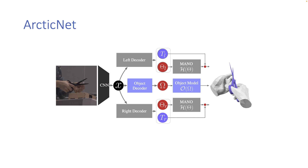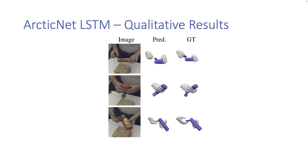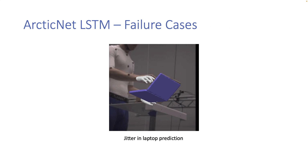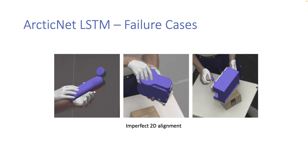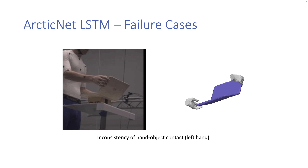To provide a baseline method, we present a model called ArcticNet. We evaluate two variations: a single-frame baseline and a temporal baseline. The temporal baseline allows use of recent hand object motions. Here we show predicted 3D meshes from the temporal baseline. The predictions resemble the ground truth. Our baseline is not perfect: the predicted object can still have jittery motion, the 2D alignment for hand and object is not always perfect, and hands do not always provide stable contact in time.